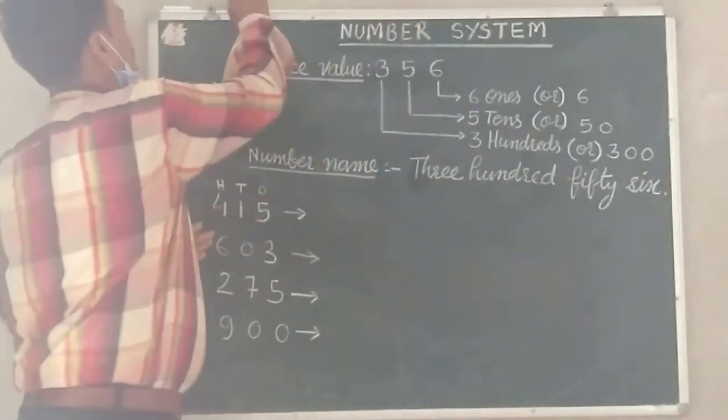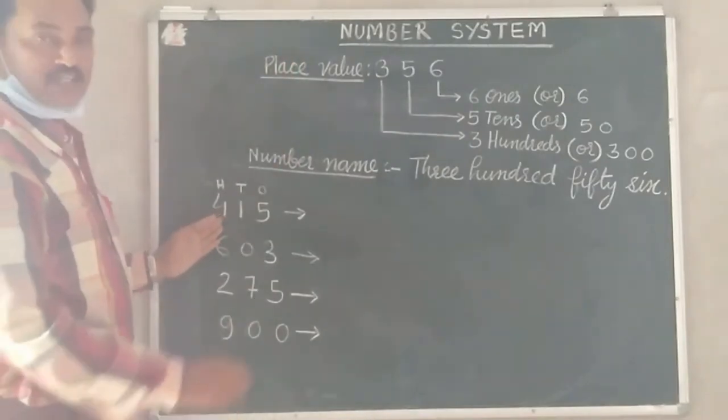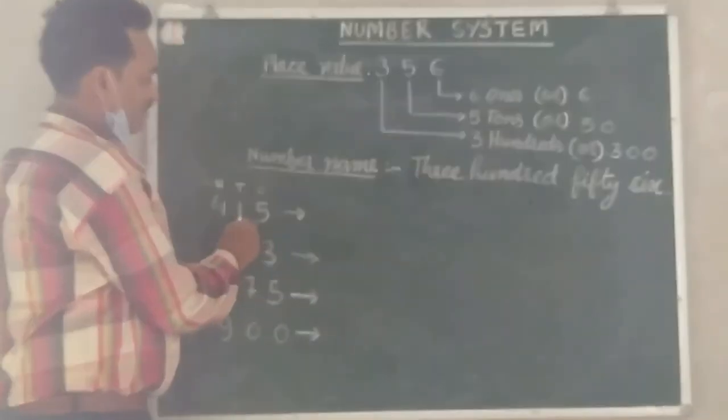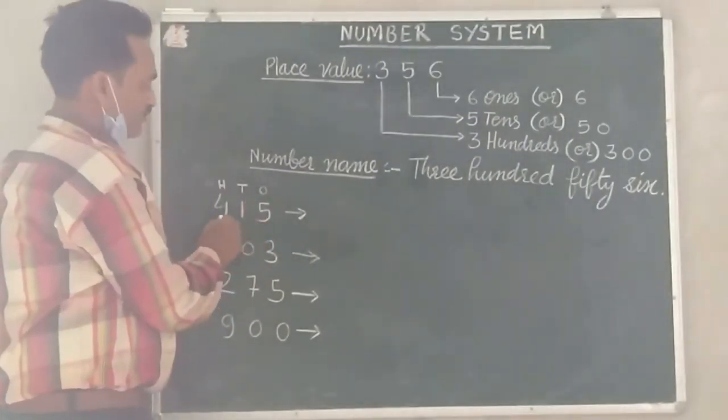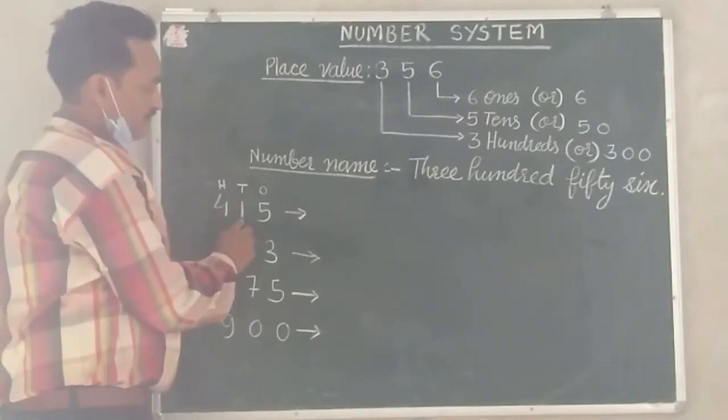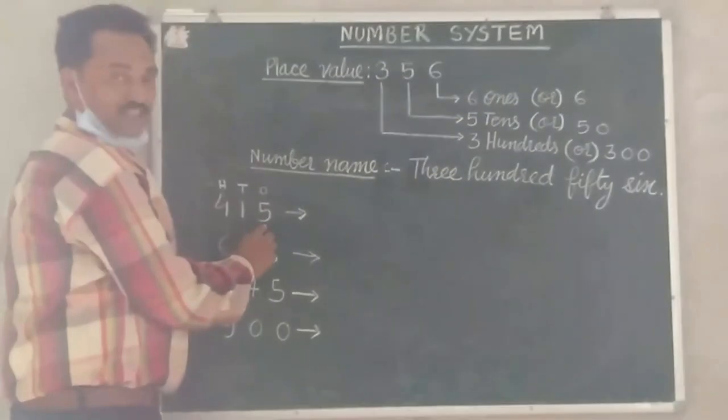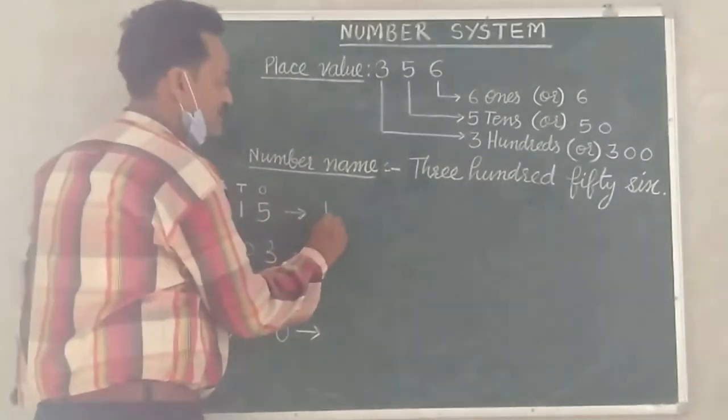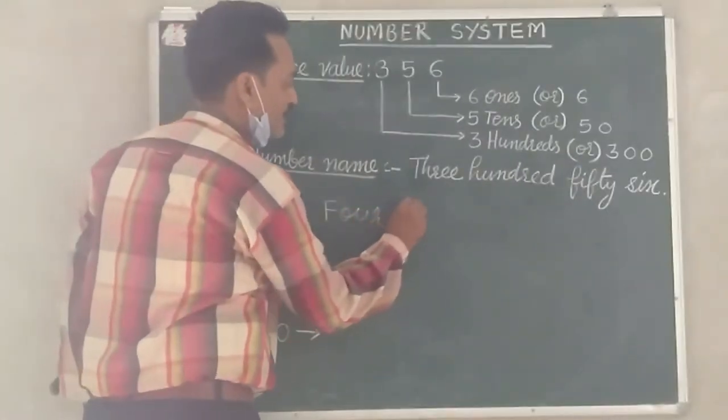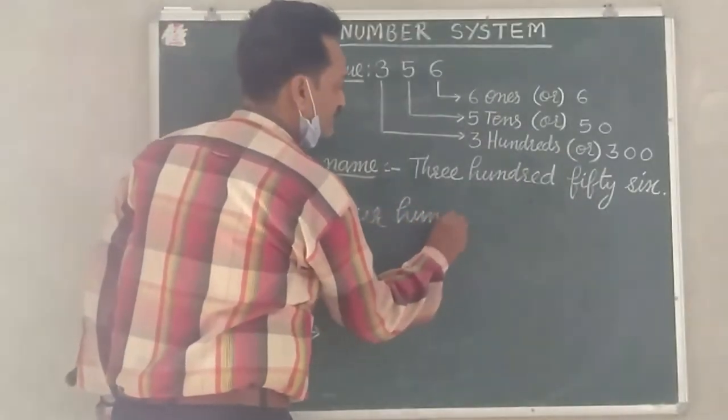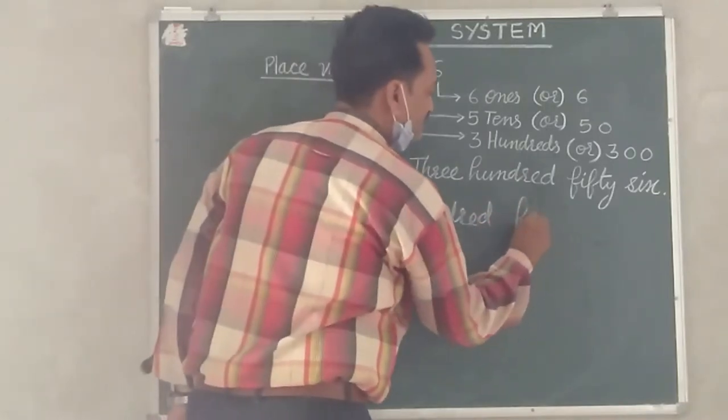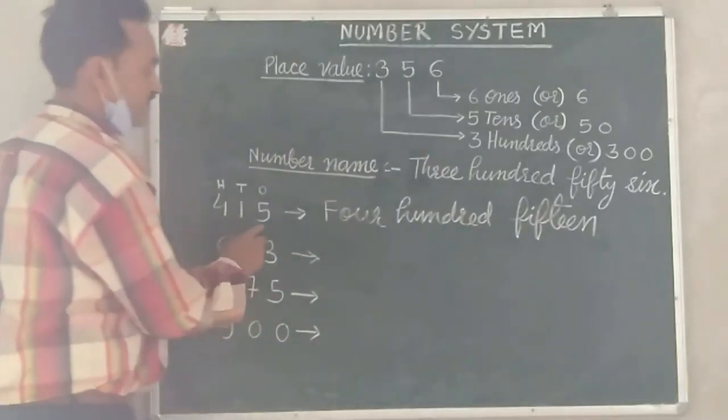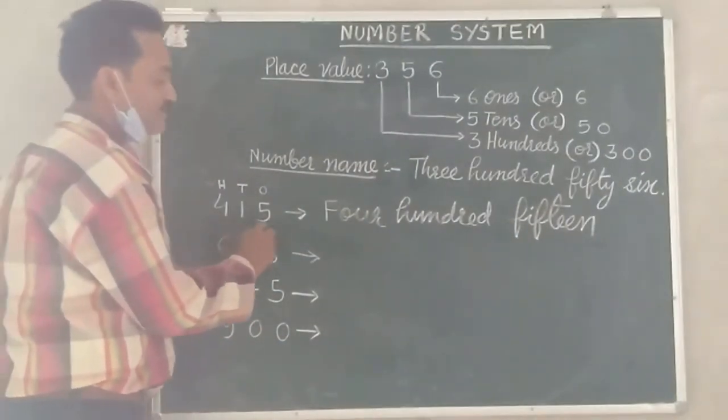Now with this number, we see that 415. So you can see that there are 5 ones and 1 ten and 4 hundreds. So 4 hundreds and 1 ten and 5 ones, what do you get? 415. So we can see that 4 hundreds, 15, and 4 hundreds, so 415.